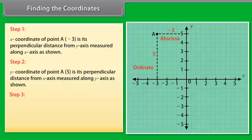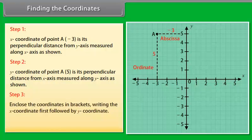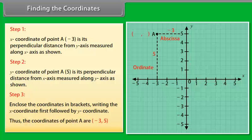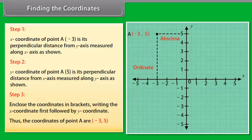Step 3: Now, enclose the coordinates in brackets by writing the x-coordinate first, followed by the y-coordinate. Thus, the coordinates of point A are (minus 3, 5).